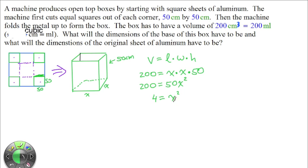Square rooting both sides, we get x equals plus or minus 2. But since this is a physical object, we're only going to take the positive root. So this base is going to be 2 by 2 centimeters.